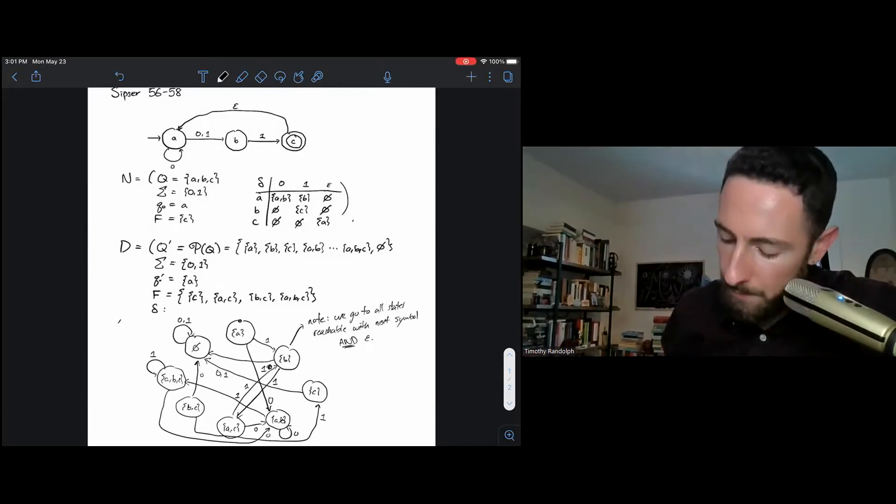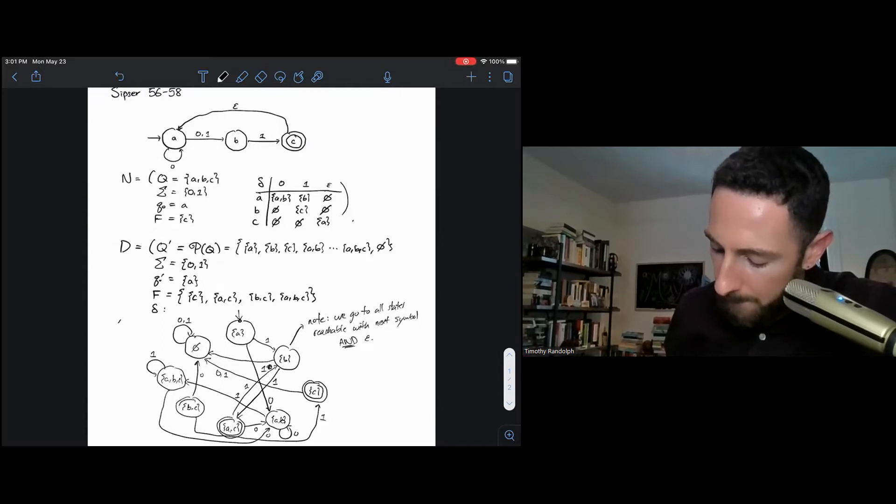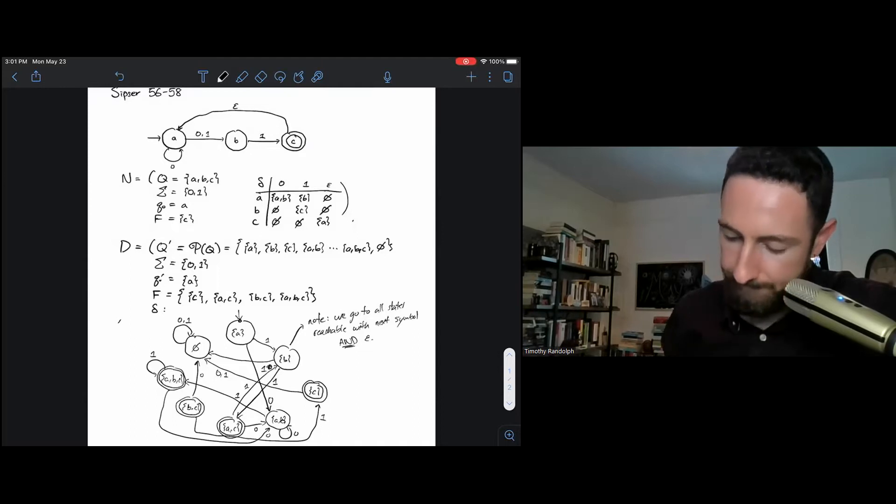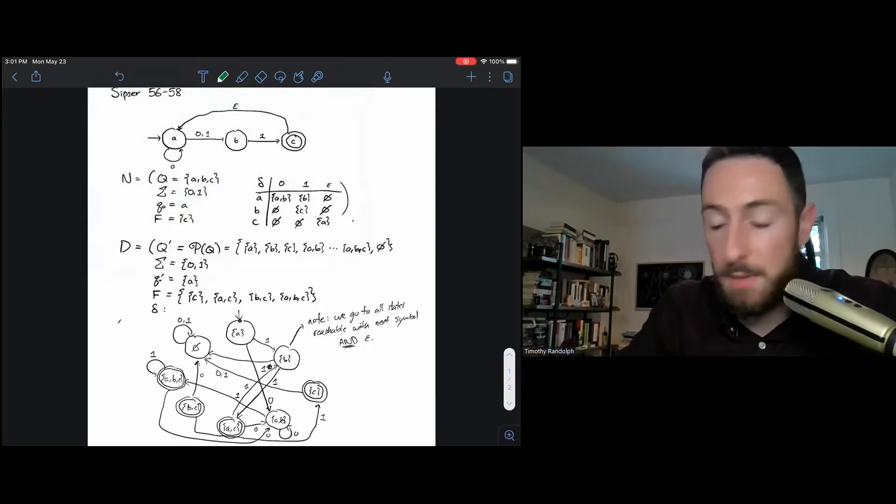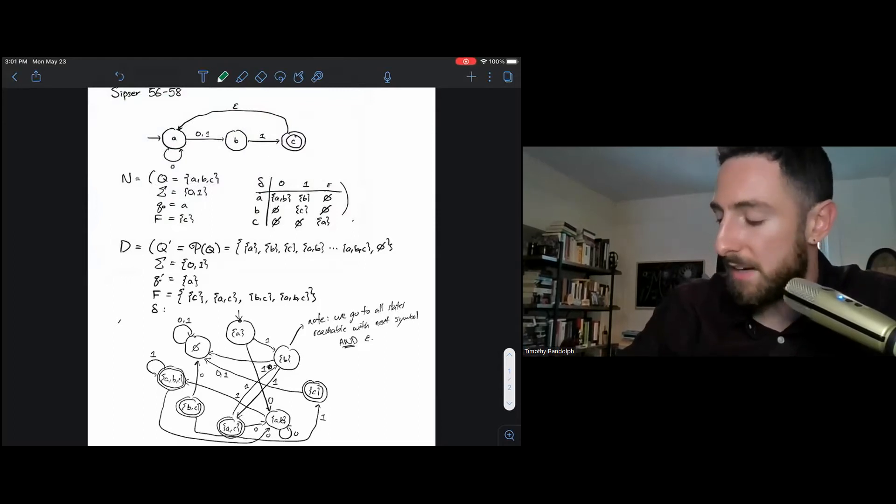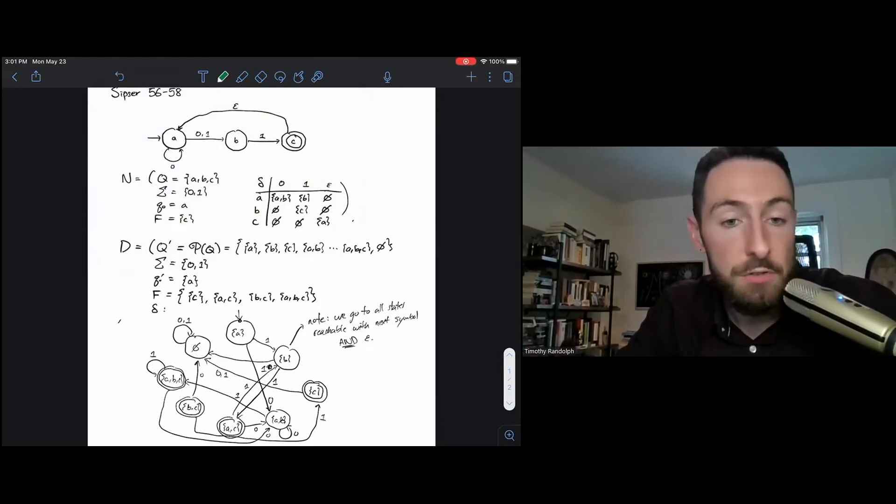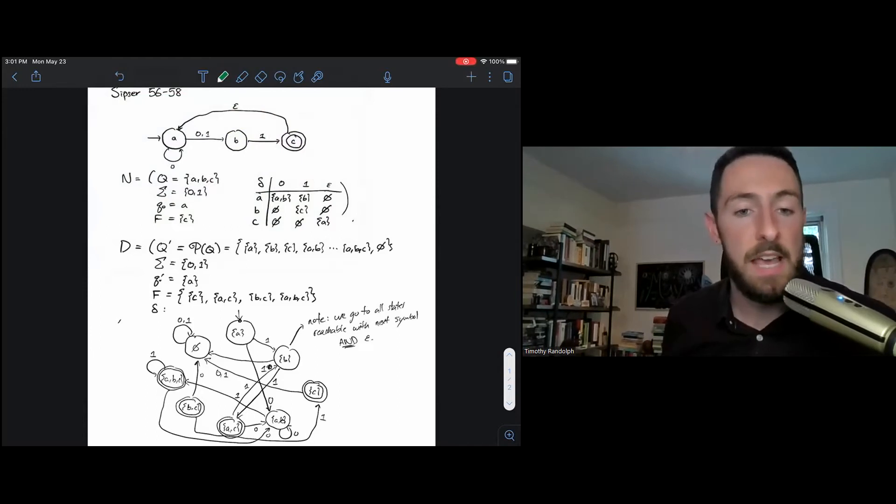To complete this, I'd want to remember to mark A as my start state and all of my states with C's in them as accept states. And that'll be my completed DFA that, if I've done this correctly, should do exactly the same thing as the NFA above.